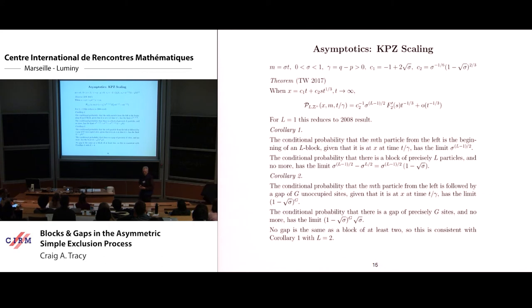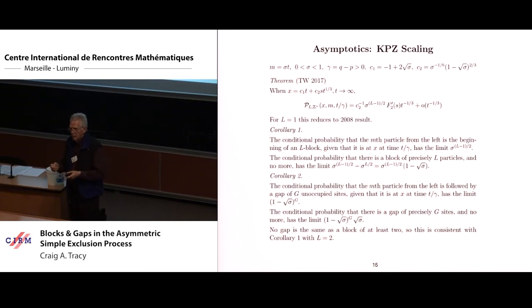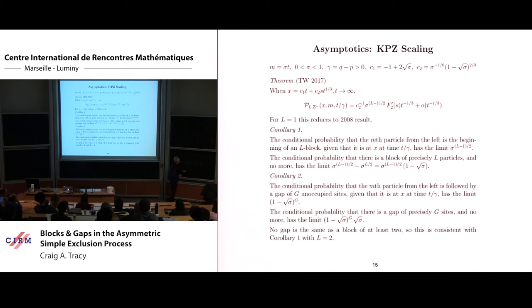Our new result is, first we recover this result. When L is one, there's no block. This is KPZ universality. The universality here is remarkable. For TASEP, Kurt Johansson in about 2000 calculated the same thing. The only difference, the C1, C2 are exactly the same. The only difference between our formula, which was derived using Bethe ansatz in a non-determinantal thing, and his, which is determinantal, is that time is scaled by this asymmetry parameter γ. Otherwise it's the same formula. That's a strong statement of universality.